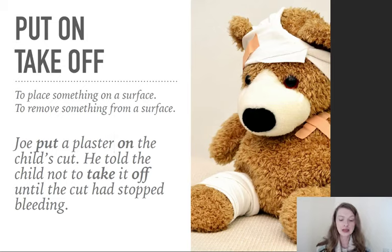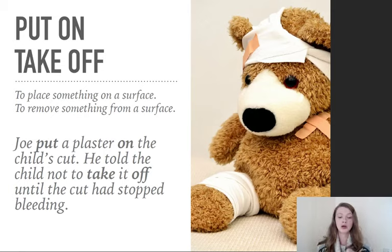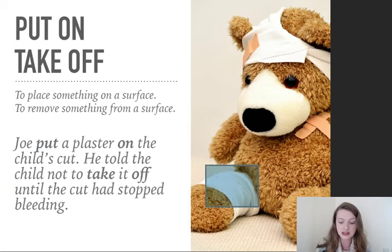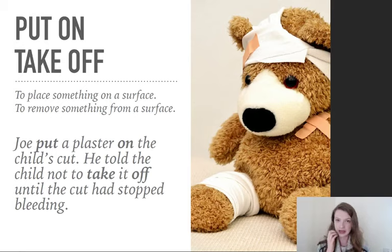Joe put a plaster on the child's cut. He told the child not to take it off until the cut had stopped bleeding. A plaster is the small adhesive covering — the orange parts on this image. The white parts would be called bandages. He told the child: don't take it off, don't remove it, because if he did, it would hurt.